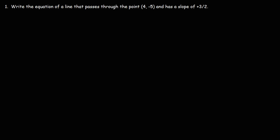In this video we're going to talk about how to write an equation of a line if we're given the slope and the point through which the line passes. In this problem, the point is (4, -5) and the slope of the line is 3/2. So how can we write the equation given the point and the slope?